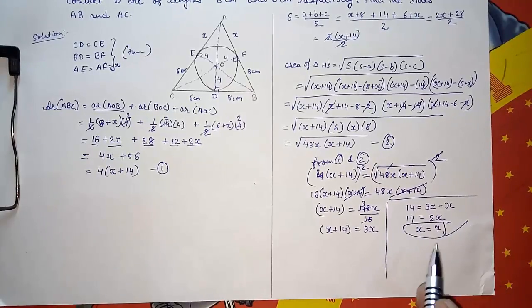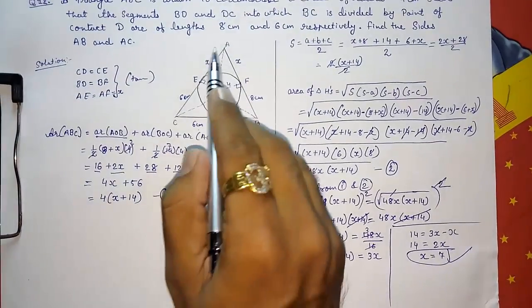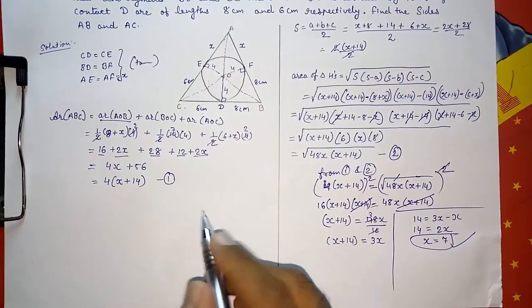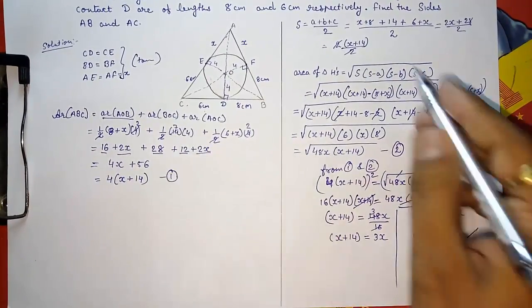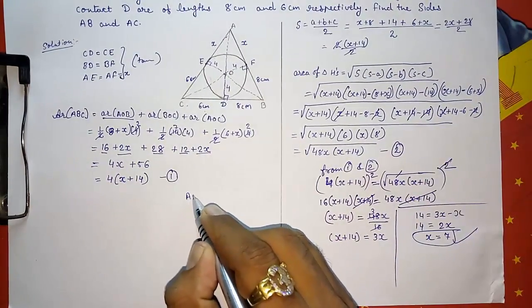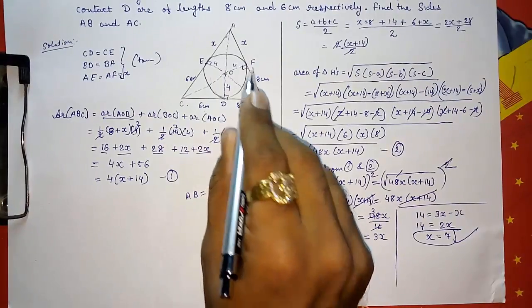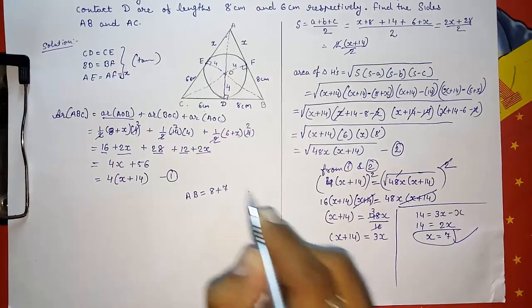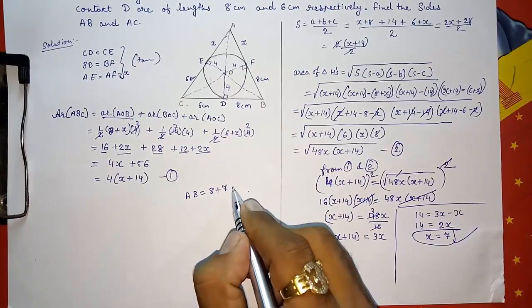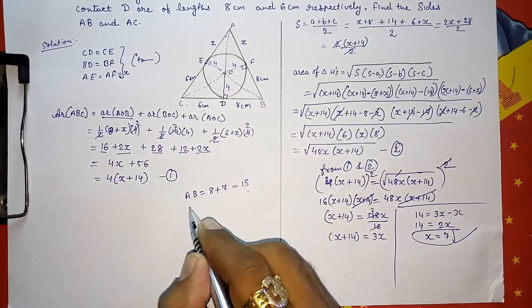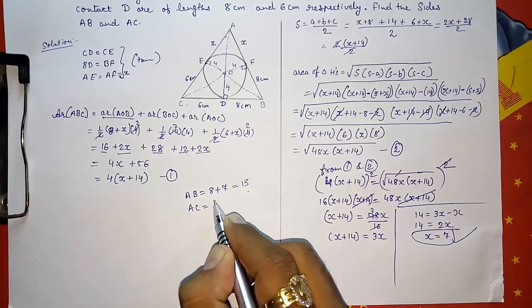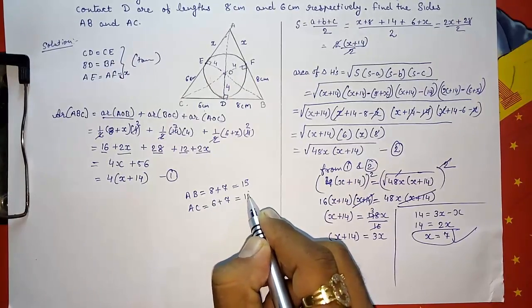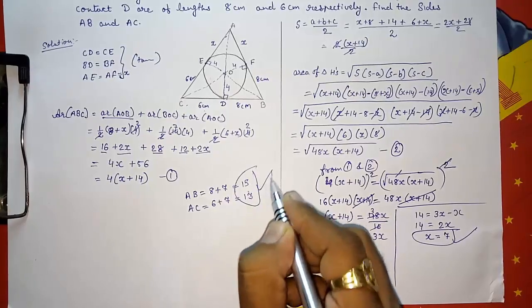Now still we had not got the answer. Actually we want to find this side. Now we got X, so I can find the side. Look here. Now AB equals to 8 plus X, so it will be 8 plus 7. We are getting value of X is 7, so this will be 15. And AC will be 6 plus X, that is 6 plus 7, that is 13. So this is our final answer.